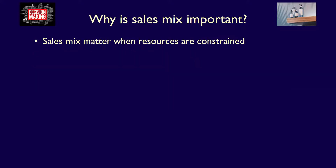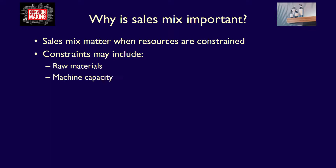Sales mix is important because companies do not have unlimited resources. Limited resources are also known as constraints. For a company, constraints may be raw materials available to produce different products, the number of hours available on a specialized machine — known as machine capacity — or the number of direct labor hours available, or many other types of constraints on resources used to produce a product.